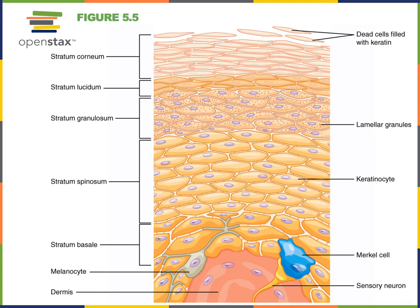The most common type of cell in the epidermis is called a keratinocyte. Keratinocytes produce the fibrous intermediate filament protein keratin that provides strength to the epidermis. Melanocytes are cells that produce a brown pigment called melanin, which is important for protecting us against the damaging effects of ultraviolet light in the sun.